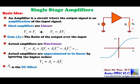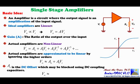A0 is the DC offset, which may be blocked using DC coupling capacitors. The output voltage then equals A1 times VI, and it is clear that the output voltage is directly proportional to the input voltage. In summary: an amplifier is a circuit that takes the input signal, amplifies it, and sends it to the output. Ideal amplifiers are linear, real-world amplifiers are non-linear, and we can approximate linearity by ensuring the input signal VI is very small.